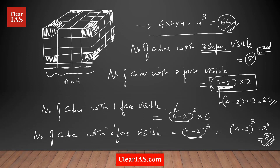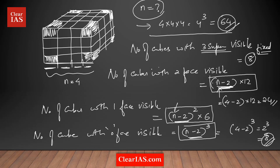You can always use these formulas for cube-based questions. You just need to know the value of n, then find how many cubes have 2 faces visible, 1 face visible, or 0 faces visible. Always remember: 3 faces visible is a fixed value of 8 in all cases. The other values depend on n.